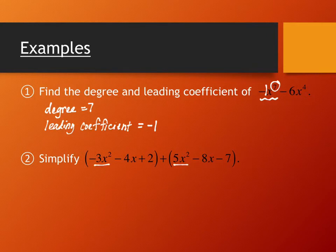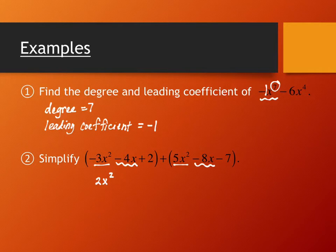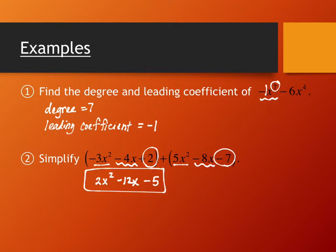The x-squared terms can be combined: I have negative three of them and positive five of them, giving two x squared. The x terms are negative four x and negative eight x, giving negative 12x. Then I have positive two and negative seven as constants, giving negative five. You're just piecewise combining the like pieces — addition is very straightforward.